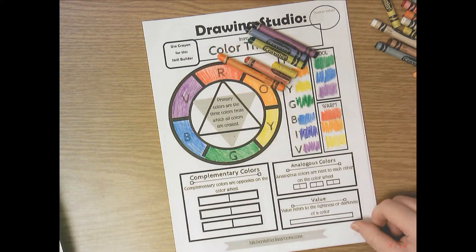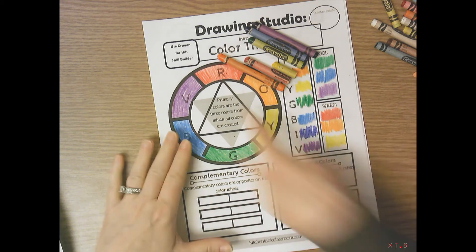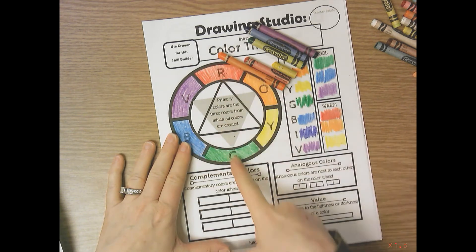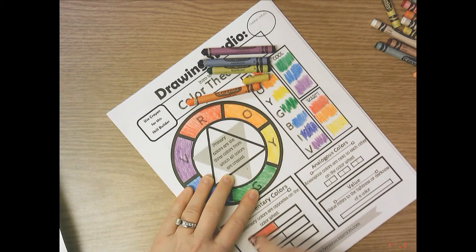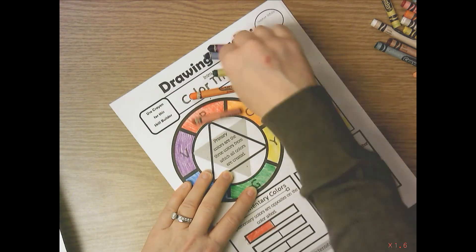Okay, so down here, complementary colors are opposite on the color wheel. So you would come straight across. So complementary colors are red and green. And I'd like you to color this in as neatly as possible and fairly solidly.